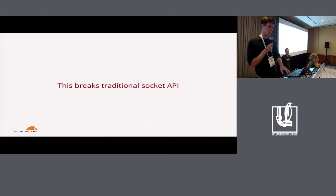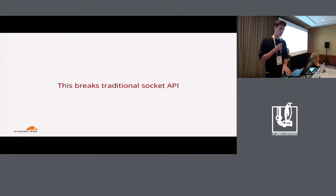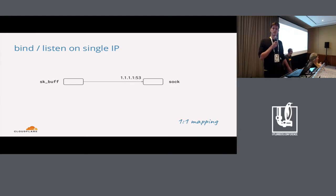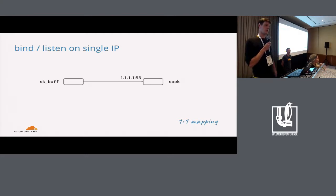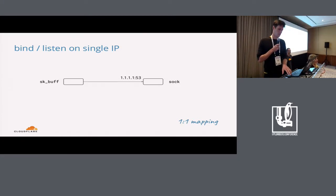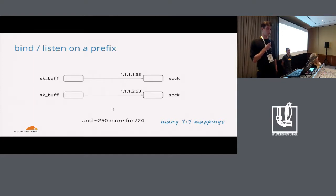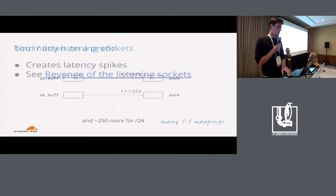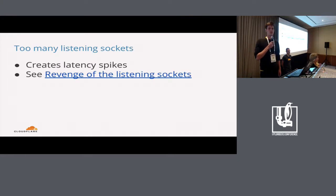And this creates a problem — it breaks the traditional Socket API for us. The common case is you do a bind or listen to a socket, and that means for a given IP address and port you receive packets on that socket, which works fine. However, if you want to do this on a subnet like 256 IPv4 addresses, that becomes difficult. The simple solution might be to just create 256 different sockets for each IP, and we tried this. However, we end up creating too many listening sockets, and it ends up creating latency spikes. There's a great blog post by Mark that explains what happens.